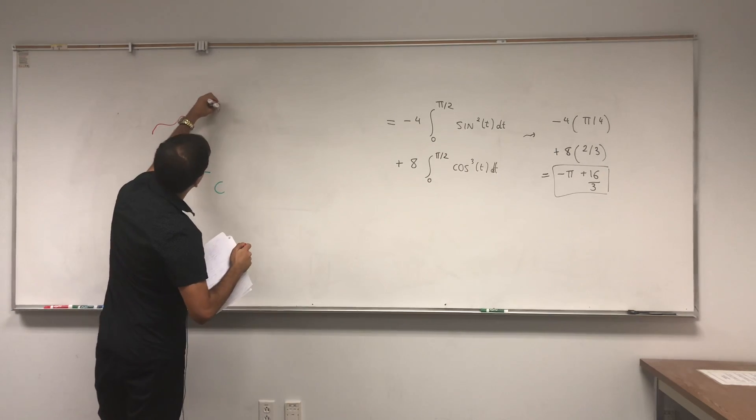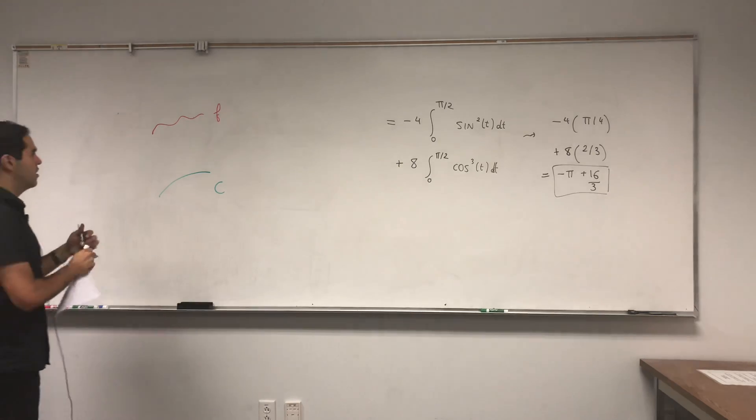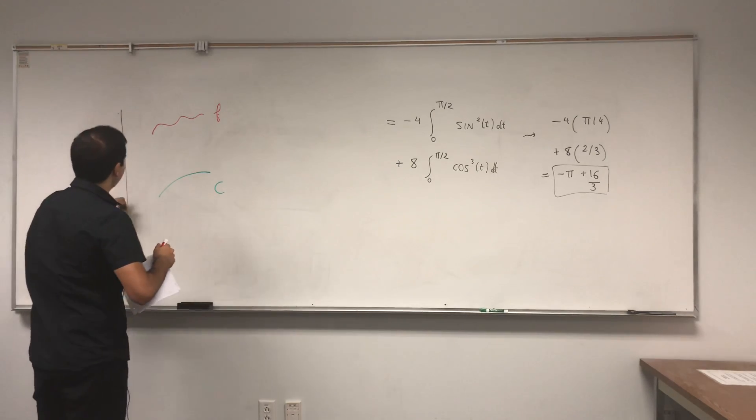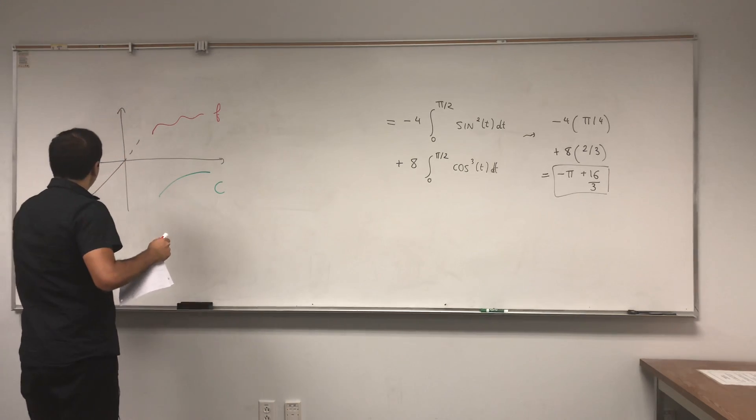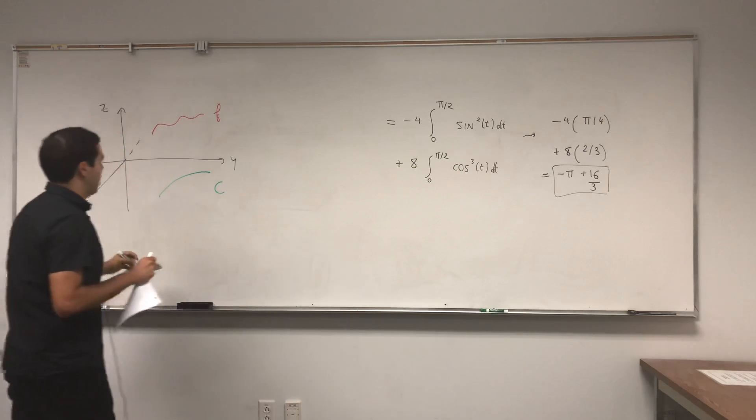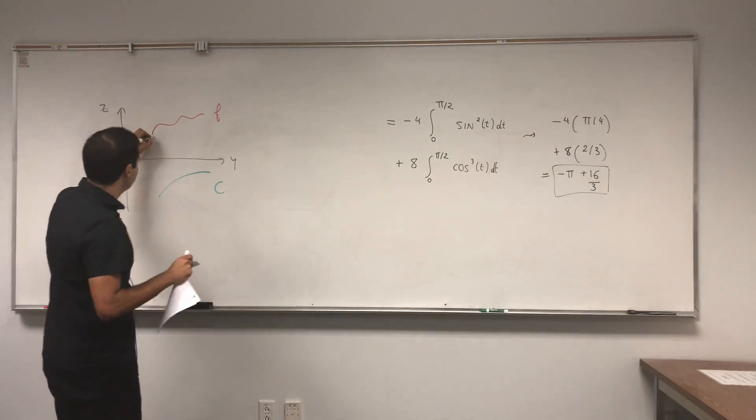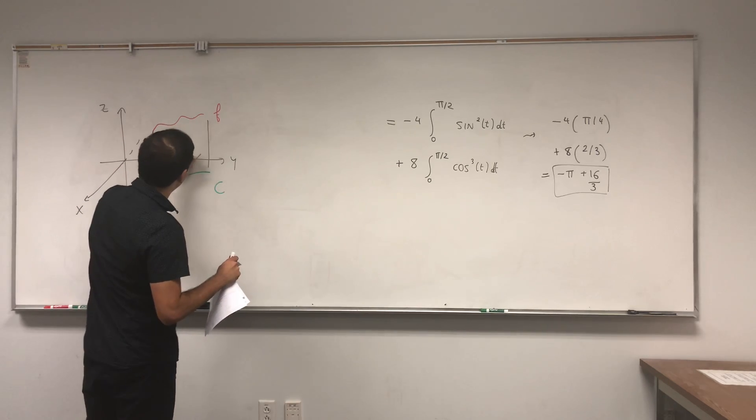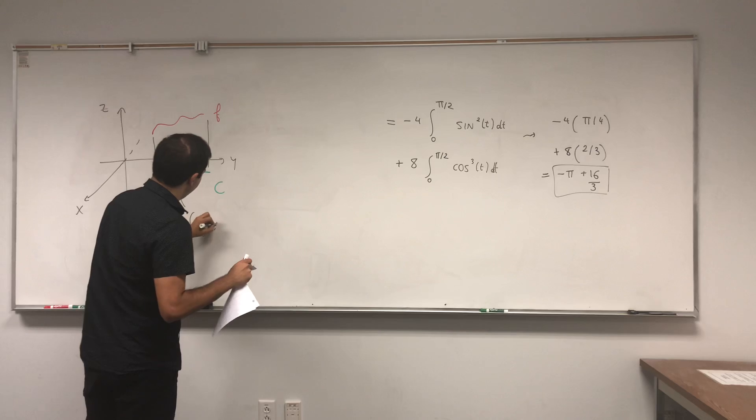And for this, again, suppose you have a curve c and some function above it. Let me use some colors. This will be useful. So this is f, and remember, suppose it's in the x-y-z plane. Now remember what the line integral with respect to ds was, because it was just the area under that fence.